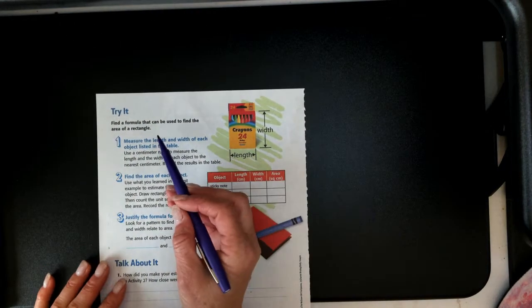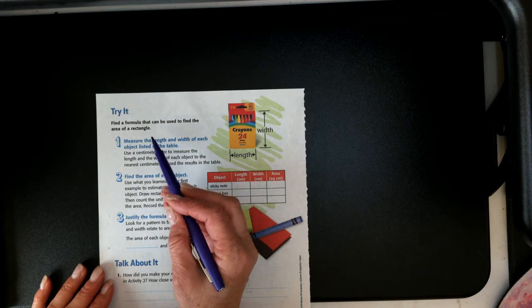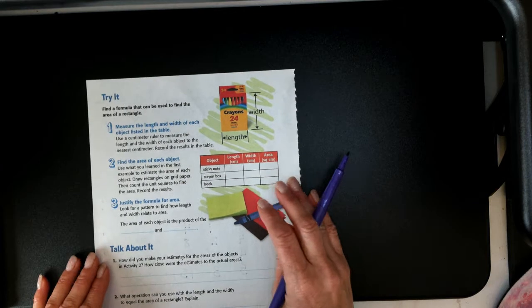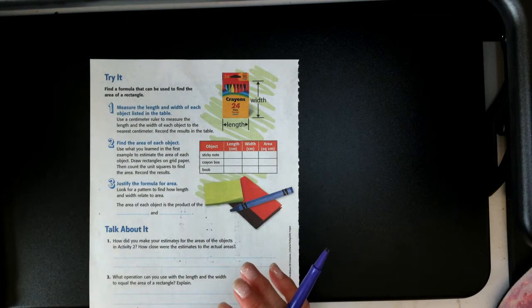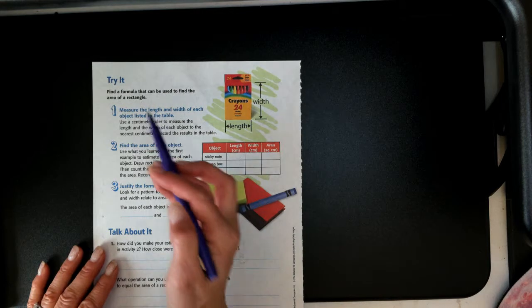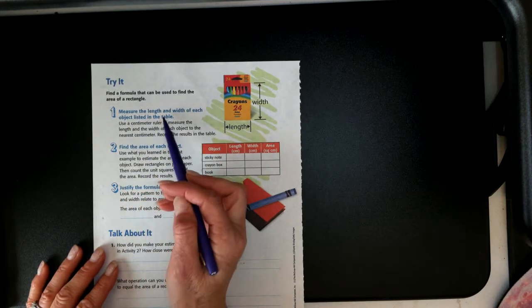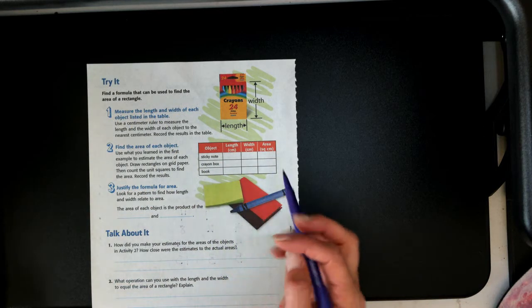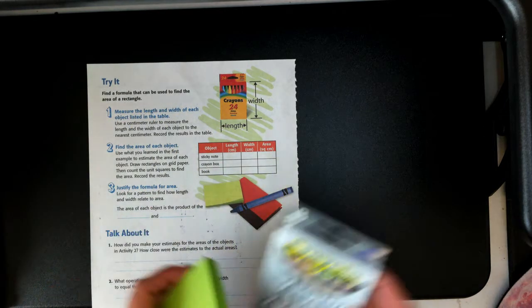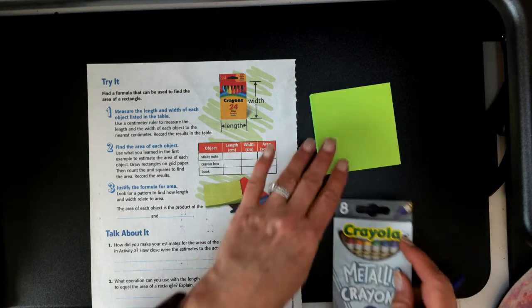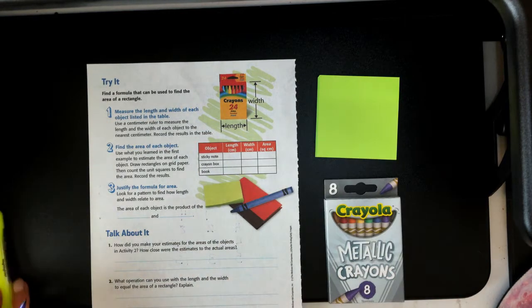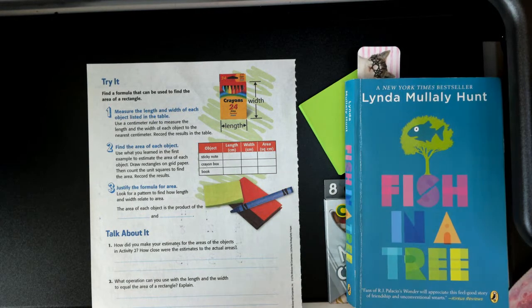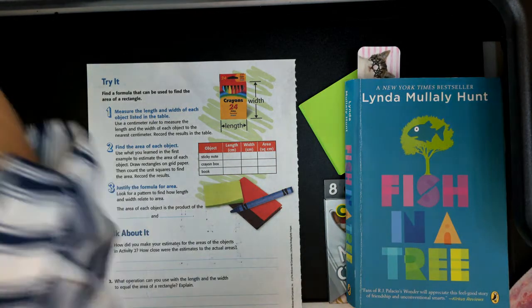Now we're going to find a formula that can be used to find the area of a rectangle. I think that's what we were kind of starting to develop in the last example. It says to measure the length and width of each of the objects listed in the table. So I went ahead and I measured my sticky note, and I measured my crayon box, and I measured my book, Fish in the Tree, and so I have all those measurements all ready.